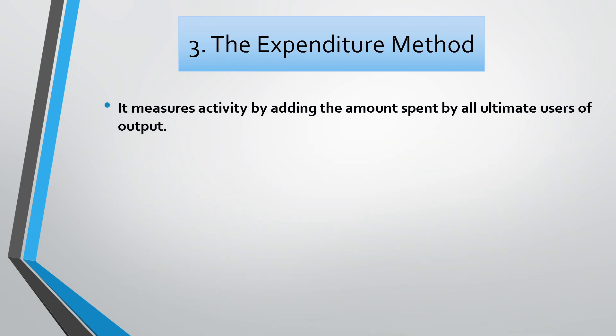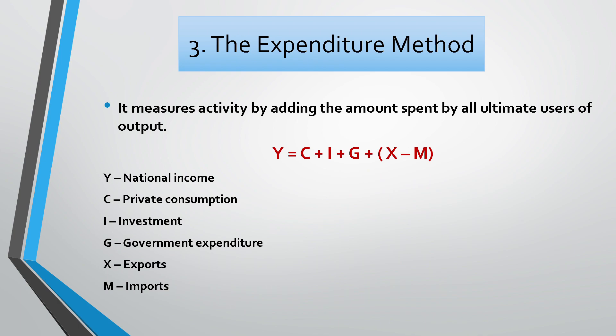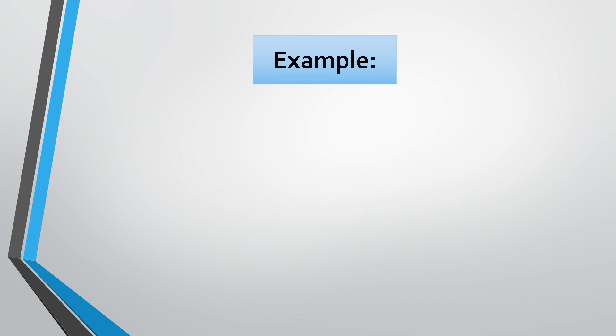Now the third method is the expenditure method. It measures activity by adding the amount spent by all ultimate users of output. According to this method, the total expenditure incurred by the society in a particular year is added together and includes personal consumption expenditure, net domestic investment, government expenditure on goods and services, and net foreign investment. So Y = C + I + G + (X - M) is how we get national income or GDP using the expenditure method.